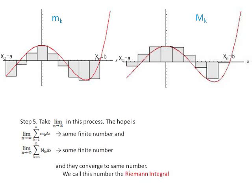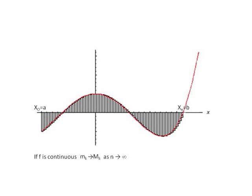Step 5. If we make an infinite number of rectangles such that n approaches infinity, the hope is that the sum of small mk times delta x from k equal 1, as the limit of n goes to infinity, will be some finite number. These two finite numbers converge to the same number, and we call this number the Riemann Sum integral. This graph shows the Riemann Sum when n is equal to 100, demonstrating that it becomes more accurate as n increases compared to n equal 9 as shown previously. Therefore, if f is continuous, small mk will approach big Mk as n approaches infinity.